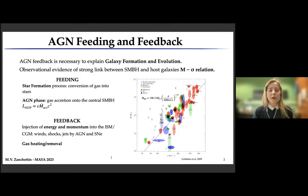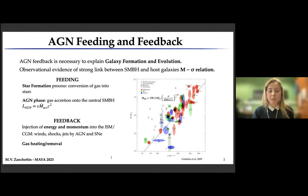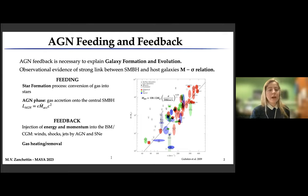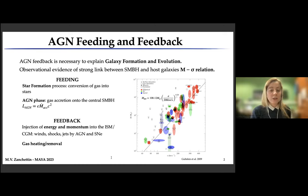In this context, we have the feeding — the star formation process in which gas is converted into stars. Then we have the AGN phase, where gas is accreted into the central supermassive black hole, causing the AGN luminosity. And then we have the feedback: the injection of energy and momentum into the interstellar medium or circum-galactic medium through winds, shocks, or jets driven both by the AGN and by supernovae. This feedback can heat or remove the gas from the host.